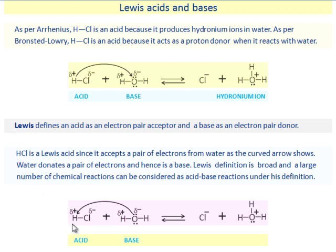HCl is a Lewis acid since it accepts a pair of electrons from water molecule as the curved arrow shows. Water donates a pair of electrons, hence is a base. Lewis definition is broad and a large number of chemical reactions can be considered as acid-base reactions under his definition.